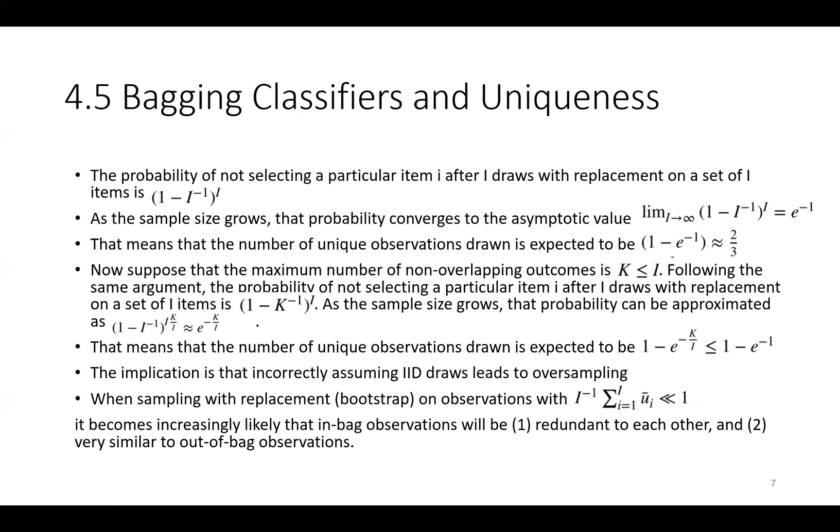The implication is that incorrectly assuming IID draws leads to over sampling. When sampling with replacement bootstrap, an observation with I^(-1) to the sum of the average uniqueness of a label would be extremely lower than one. It becomes increasingly likely that in-bag observations will be redundant to each other and very similar to out-of-bag observations.